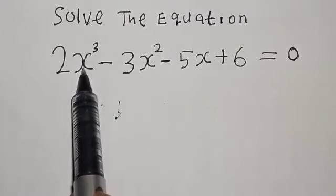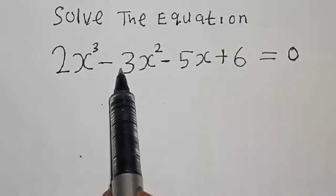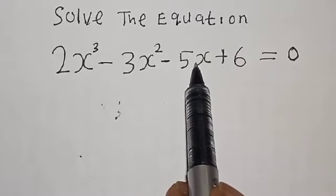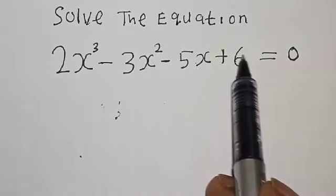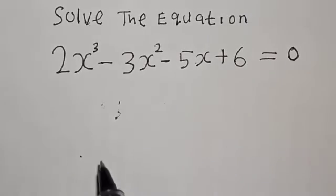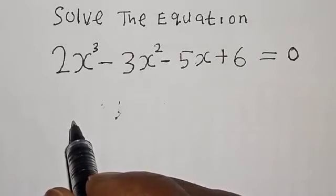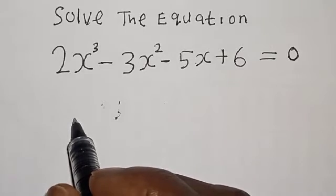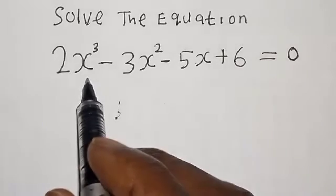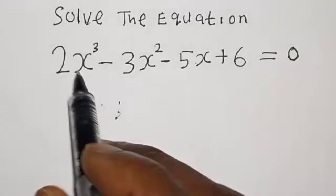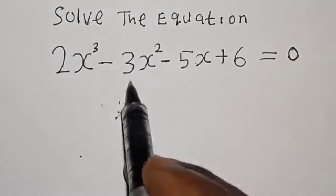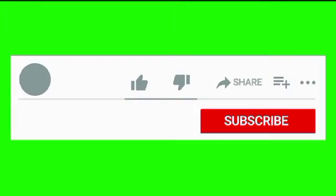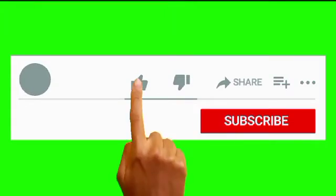Solve the equation 2s³ minus 3s² minus 5s plus 6 equals 0. Hi everyone, welcome to my class. In this class we want to look at how we can quickly find the roots from this given polynomial equation of degree 3. But before we proceed, please don't forget to like, share, comment and subscribe.